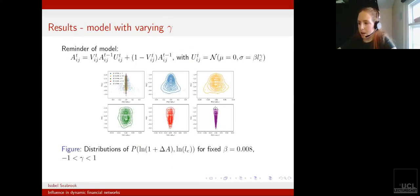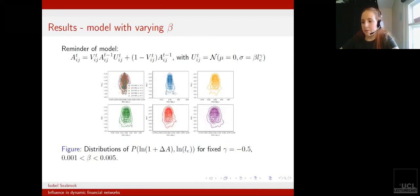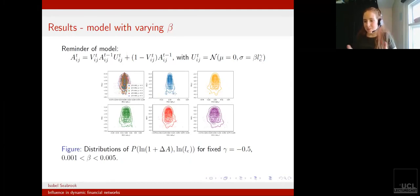And for the final parameter, the beta parameter, we simply see that it controls the width of the distribution.